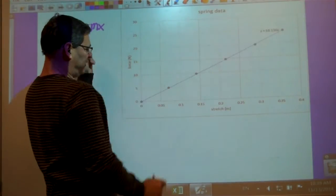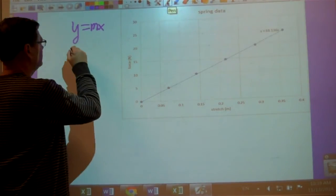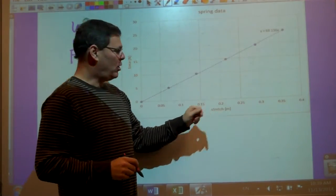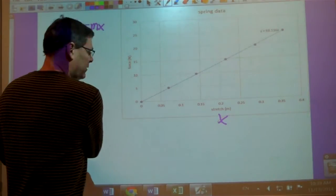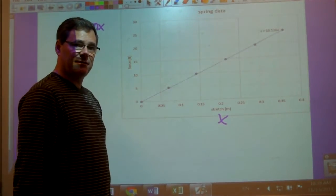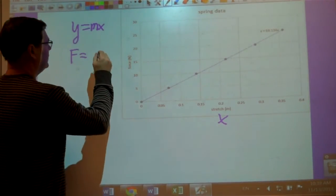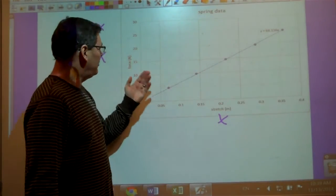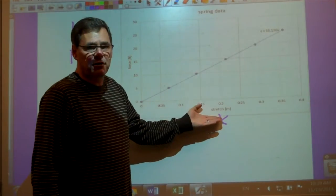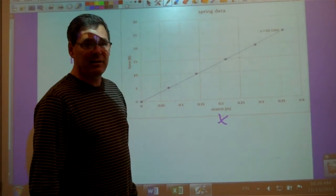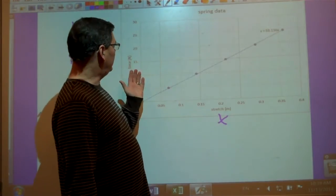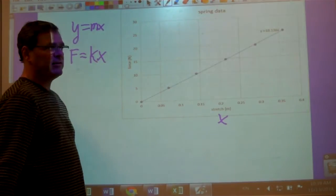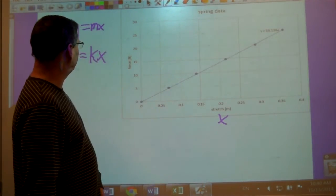And on the y-axis, I have force. On the x-axis, I have stretch, which we'll label with the variable x to indicate some stretch in the x direction. And a straight line means that the force is proportional to the stretch, which means we have a constant of proportionality to relate the two. We'll call that k for the constant of proportionality of the relationship between force and stretch.